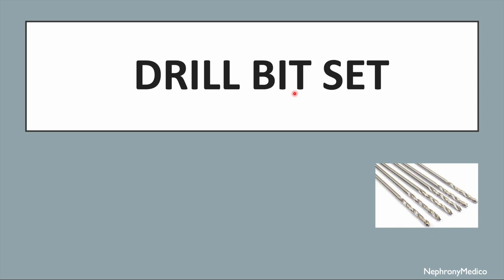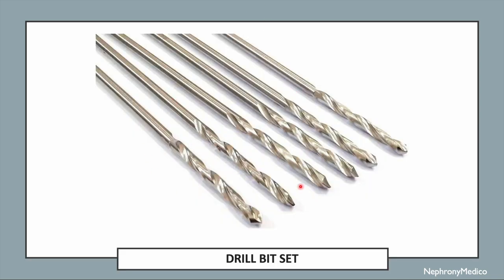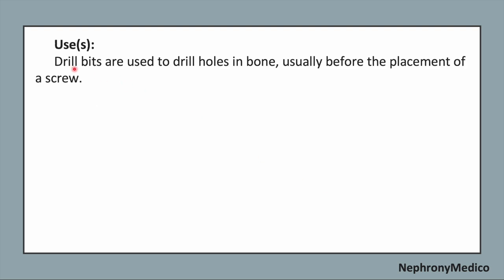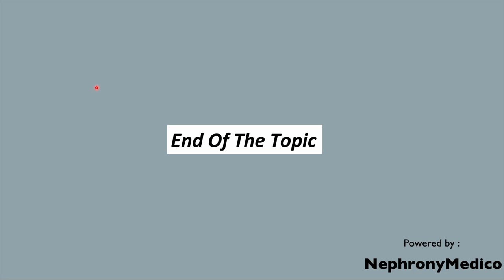Let's talk about the drill bit set. This is a picture showing a drill bit set, also known as a drill box. It is a cutting and dissecting type of instrument. The drill bits in this set range from 1.6 to 4.7 millimeters. Drill bits are used to drill holes in the bone, usually before the placement of a screw.